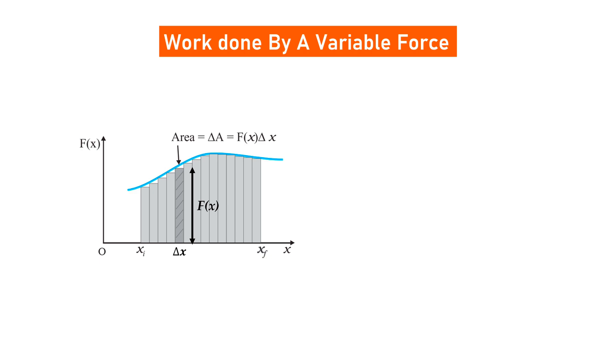Now, just find the area of this rectangular strip. That is, delta A is equal to F of X into delta X. Here, you can observe that on the right hand side, we have the product of force and displacement. It means that we are getting the small work done for a small area.